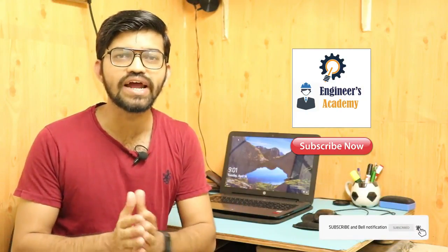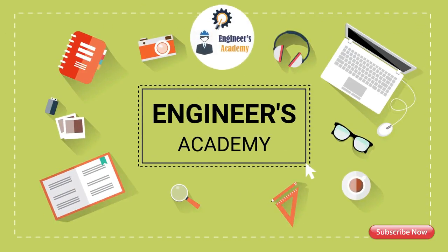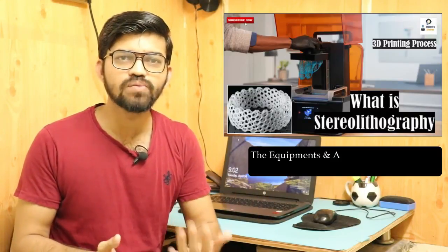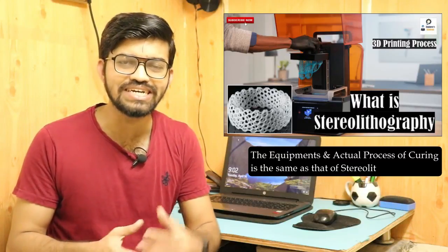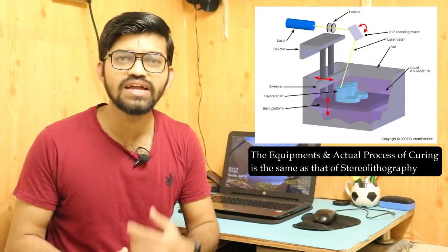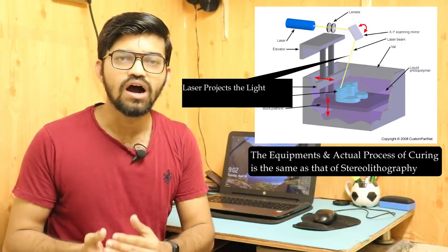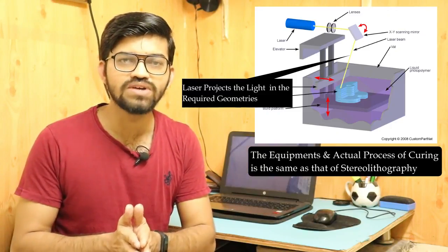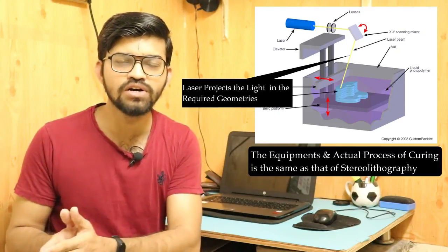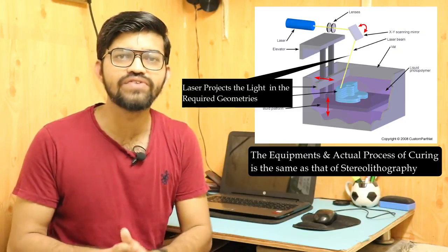To understand the concept of DLP, it helps to have watched the previous video on stereolithography, because the equipment and the actual process of curing and manufacturing the 3D object is the same. DLP is very much equivalent to stereolithography except for one deviation: in stereolithography, a laser projects a 3D replica of the object onto the surface of the vat polymer, creating layer by layer to produce a 3D prototype.